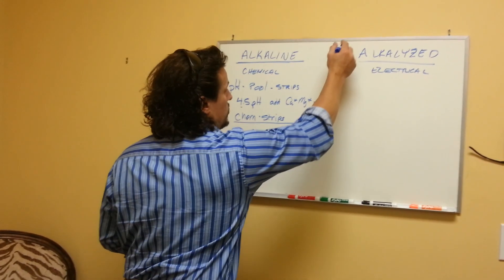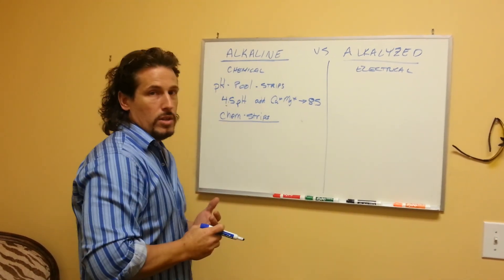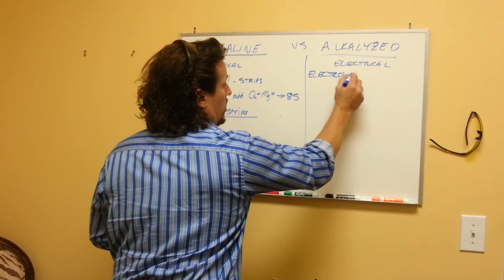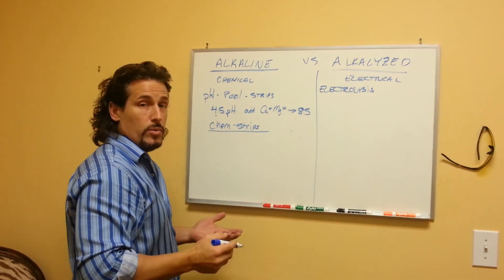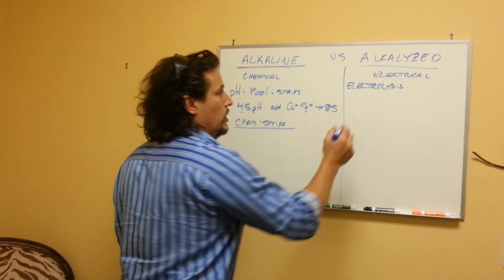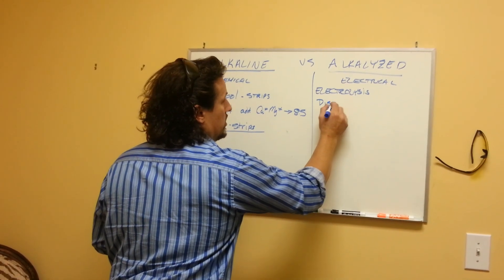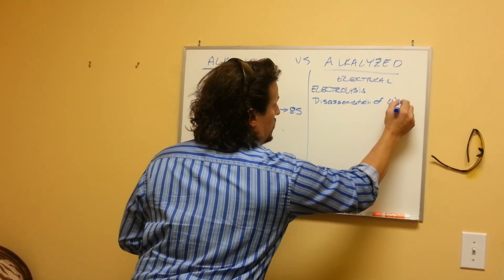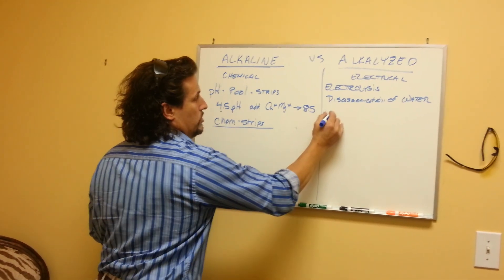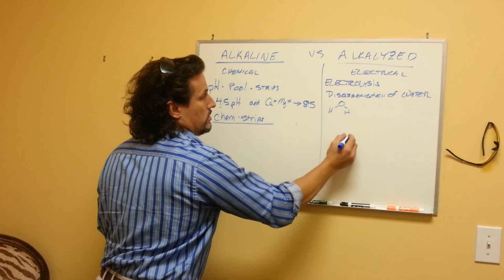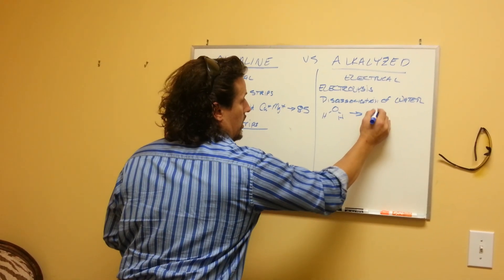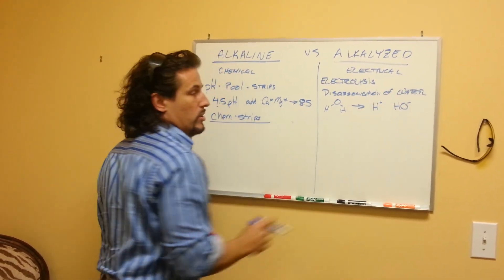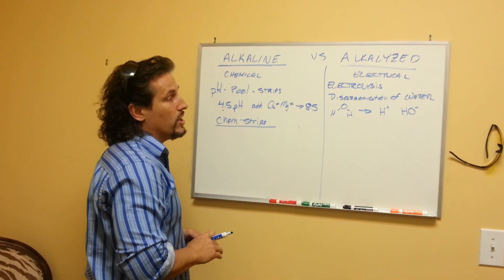When you start to compare this to alkalized water, what's going on is there is an electrolysis process — basically it's shocking the water. It takes an enormous level of energy to do a process called the disassociation of water. You can Google that. Basically, it's the process by which you take water and split it into a hydrogen ion and a hydroxyl ion. The hydroxyl gives you a free electron that you can use as a free radical scavenger.